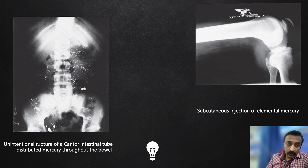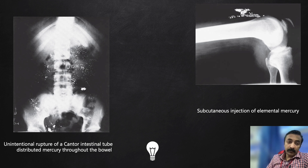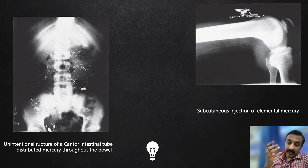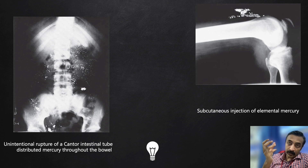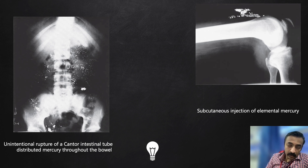Now what you see here are other forms of mercury inside the human body. This is an unintentional rupture of a Cantor intestinal tube — these are intestinal tubes with a mercury tip which helps the tube remain in a specific position. We don't use them nowadays but this is of historical and medical importance from a knowledge perspective.